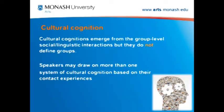I have also drawn on the field of distributed cognition to gain a better understanding of cultural cognition as a form of what they call distributed cognition — but I have called it heterogeneously distributed cognition. Cultural cognition emerges from group-level social and linguistic interactions between members of a speech community, but they do not define groups. This is where cultural linguistics is moving away from essentializing groups of people and speakers.